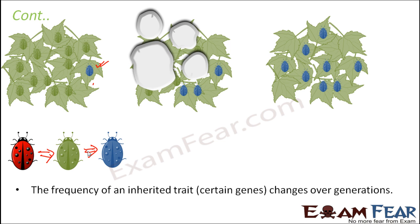For example, when only red beetles exist, Hardy-Weinberg equilibrium may hold true. But when reds are being replaced by greens, the equilibrium is disturbed — so evolution is taking place. Whenever p² + 2pq + q² = 1 is not satisfied, that means evolution is occurring.